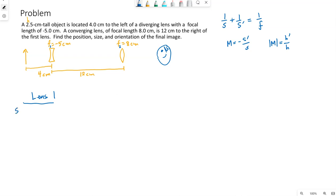So S1, the object is 4 centimeters away from lens 1. The focal length of lens 1 is negative 5 centimeters, negative because it's a diverging lens.